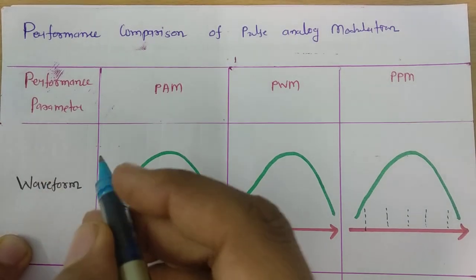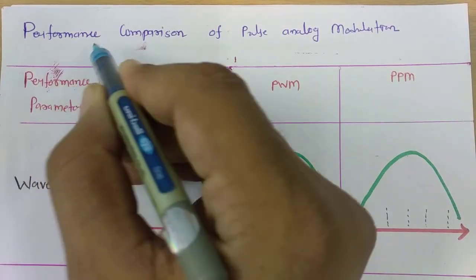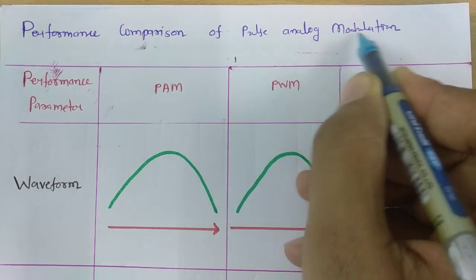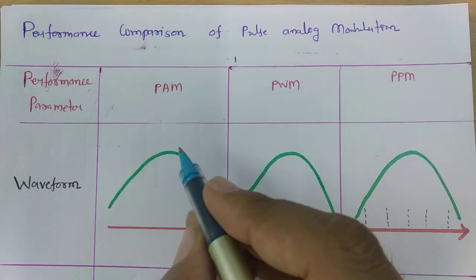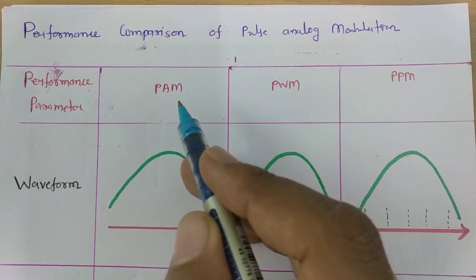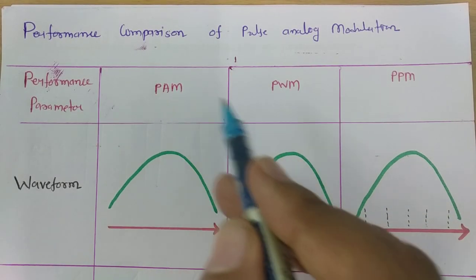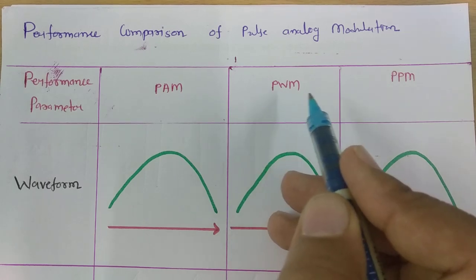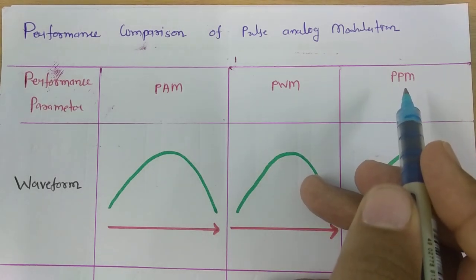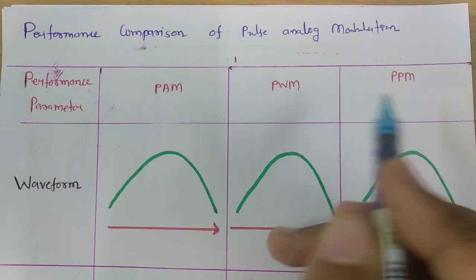Welcome to Digital Communication Playlist. Here in this session, I will be explaining Performance Comparison of Pulse Analog Modulation. In Pulse Analog Modulation, I have already explained three techniques: Pulse Amplitude Modulation, Pulse Width Modulation, and Pulse Position Modulation. In this session, we will be studying a comparison of these three methods.